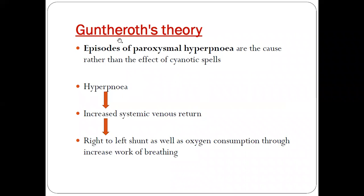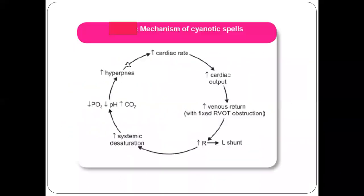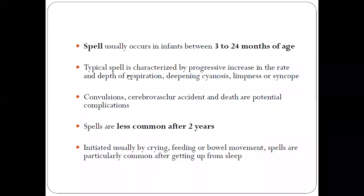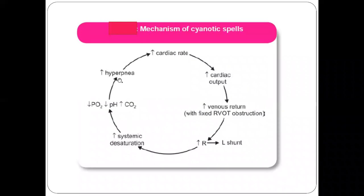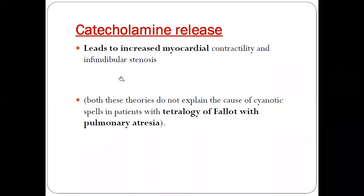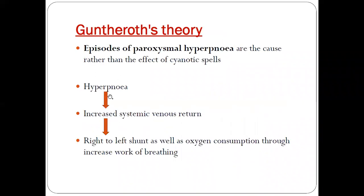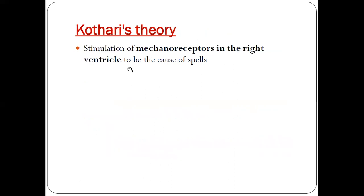The third theory is Guinterot's theory, which describes episodes of paroxysmal hypernea. Guinterot's theory is the reverse of the hypoxia-leads-to-hypernea sequence. It says that because of increased hypernea, children start breathing more deeply, leading to increased systemic venous return due to the increased depth of inspiration. This increases the right-sided heart load, causing more right-to-left shunting — this is known as Guinterot's theory.